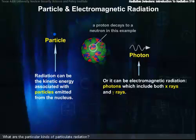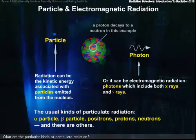What are the usual kinds of particulate radiation? Well, there's alpha particles, beta particles, positrons, protons, neutrons, and there are others.